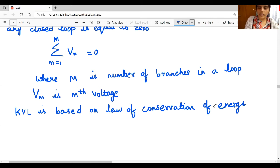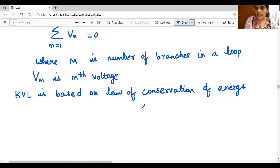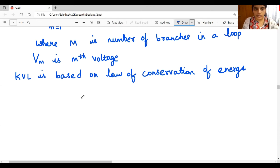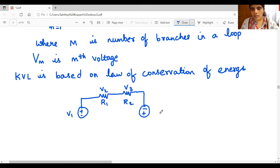Let us consider one example in order to understand this thing in detail. Let it be V1 and resistors, let the voltage across be V2, V3 and another voltage source. Let us see V4 and some element.